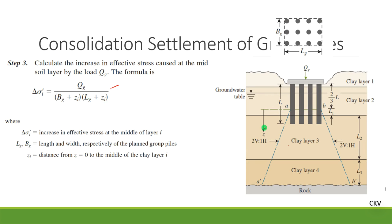Given the figure, we have two clay layers, so it is possible to determine two consolidation settlements. We will determine the consolidation settlement for clay layer 3. From Step 2, we identified the two-thirds pile length from the top as the starting point where stress distribution spreads up to the mid-height of clay layer 3. At the starting point, the area corresponds to the rectangular block of the group pile, with dimensions B_G and L_G.